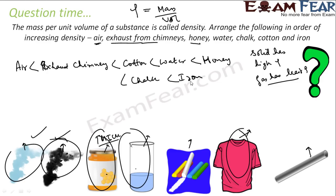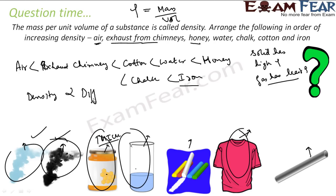We know that chalk is less dense than iron because iron is very strong and very difficult to break. You can actually look at this question from the perspective of how easy it is to break something — higher density implies more difficult to break.